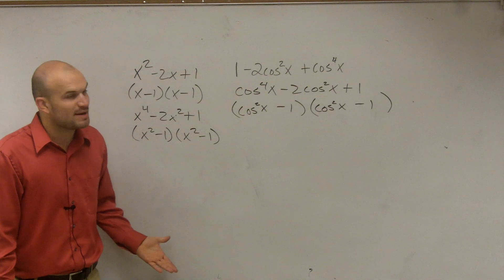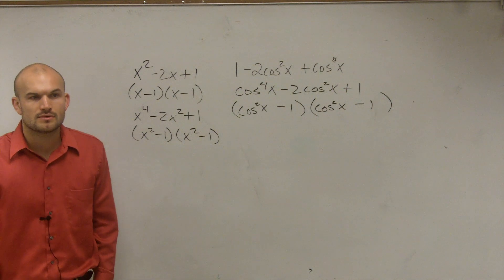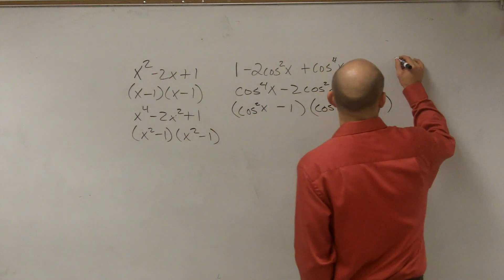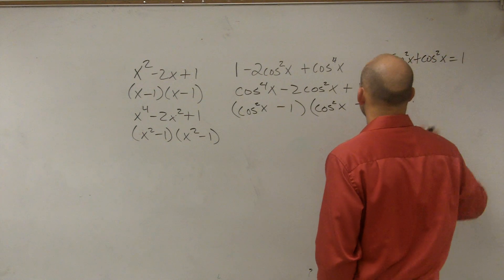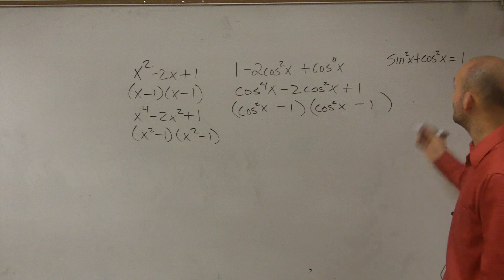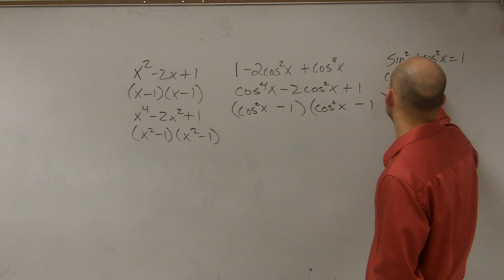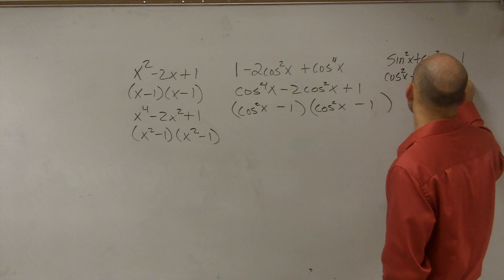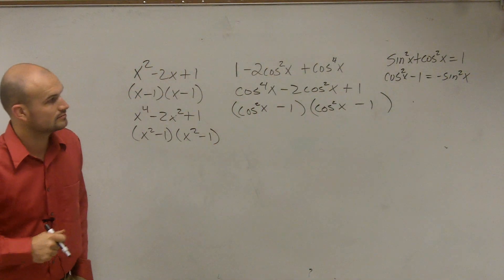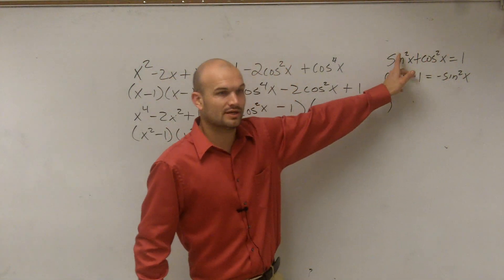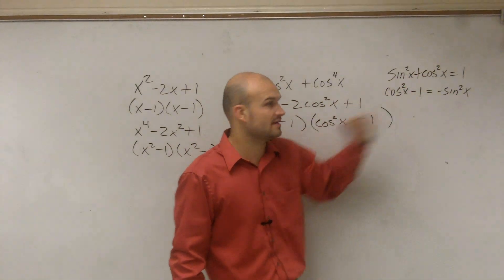So now I have cosine squared of x minus 1. Does cosine squared of x minus 1 equal anything? Remember, sin squared of x plus cosine squared of x equals 1. So you could say that cosine squared of x minus 1 equals negative sin squared of x. If you subtract the 1 to the other side and then subtract the sine to the other side, you get cosine squared of x minus 1 equals negative sin squared of x.